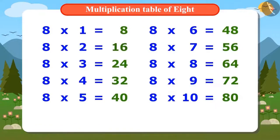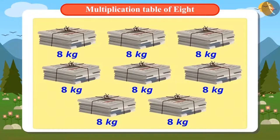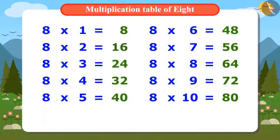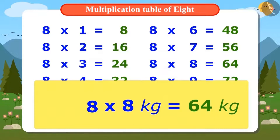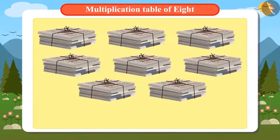Vandana has now written down the entire multiplication table of 8. You can check whether the table you wrote is the same or not. With the help of this table, Vandana can calculate the weight of 8 bundles of newspapers where each bundle weighs 8 kilograms. The answer is 8 multiplied by 8, which is 64 kilograms.